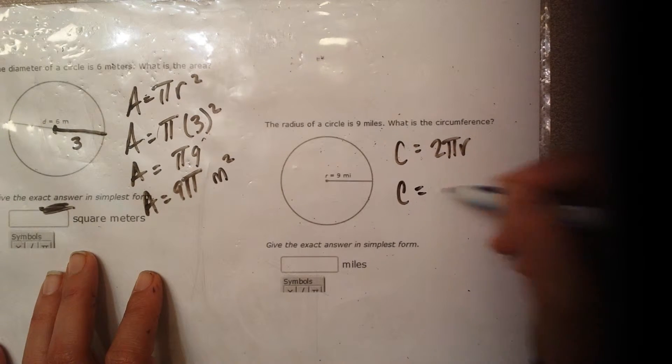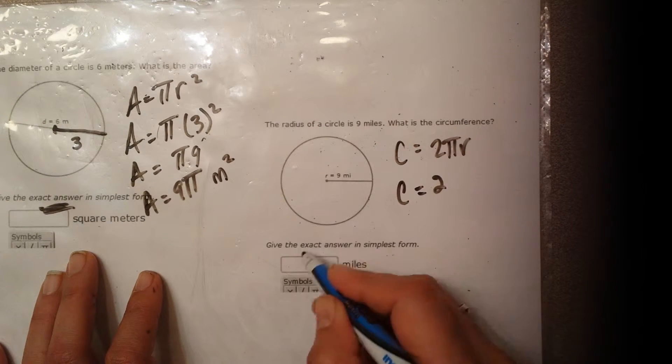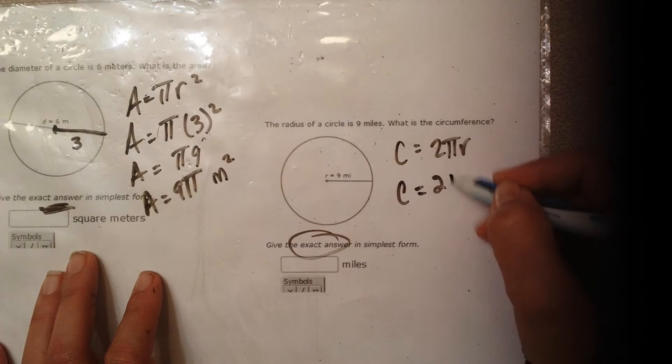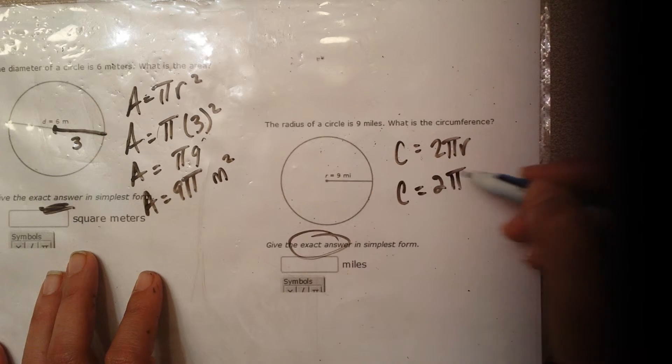So c is equal to 2 pi r is a formula. Go ahead and just plug in the numbers. c is equal to 2. And again, because they want an exact answer, you're going to leave pi in the problem times the radius, which is 9.